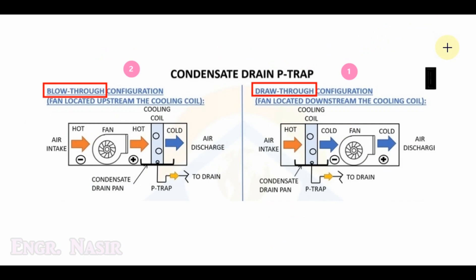Now we come to the main topic — calculation of trap size for condensate drain piping for HU and FCU. Before starting the calculation, we need to understand the configuration of AC units. These units can be divided into two types: draw-through type and blow-through type. In draw-through type the cooling coil is before the fan, while in blow-through type the cooling coil is after the fan. In common use, only the draw-through type is typical.